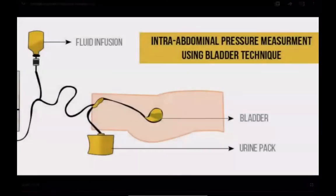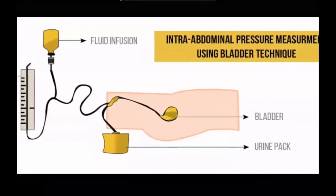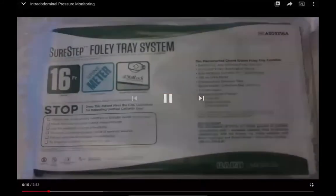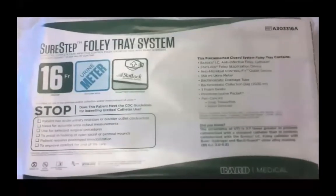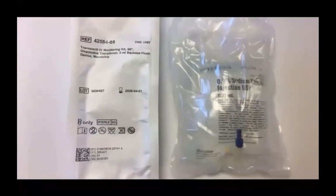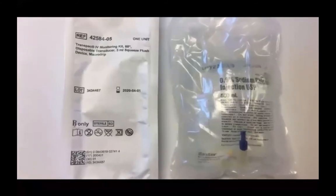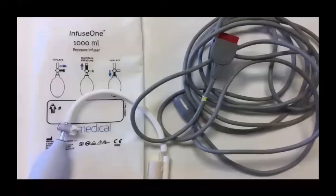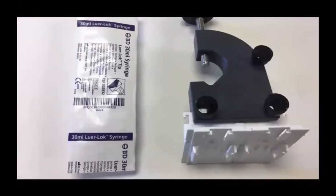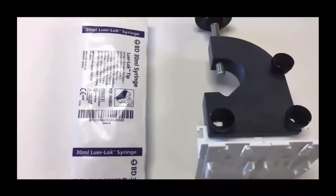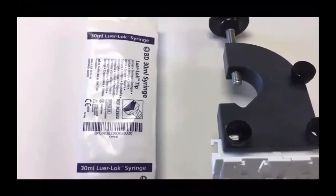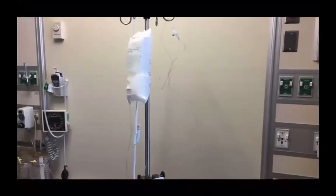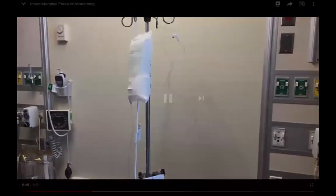To measure intra-abdominal pressure via the bladder technique, your patient needs a conventional single-lumen indwelling urinary catheter. You will also need: a pressure transducer setup including a TransPak IV monitoring kit and 500 mL IV bag of normal saline, a pressure bag and transducer cable, transducer holder, IV pole, and a 30 mL luer lock tip syringe. After complete setup and priming the pressure transducer system, change the label of the line to CVP on the monitor.